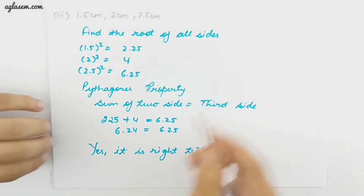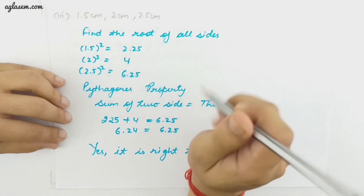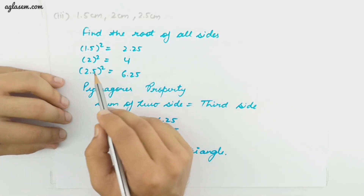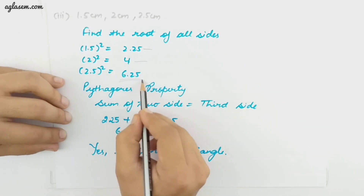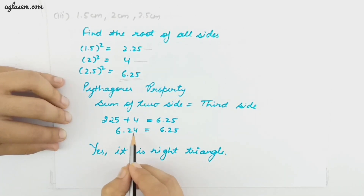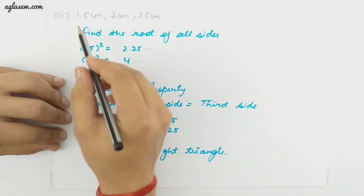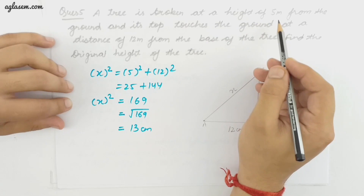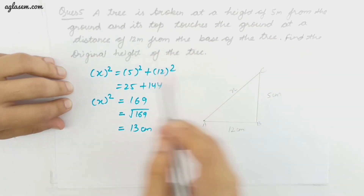For the third part, you should try it yourself and share in the comments. The square of 1.5 is 2.25, the square of 2 is 4, and the square of 2.5 is 6.25. Adding 2.25 and 4 gives 6.25, which equals the third side. So this measurement will form a right triangle. Question 5: A tree is broken at a height of 5 meters from the ground and touches the ground at a distance of 12 meters from the base. Find the original height of the tree.